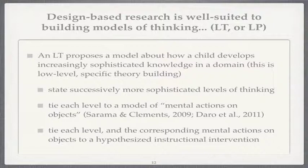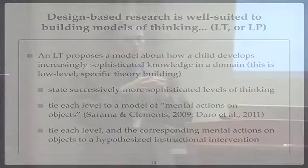A learning trajectory proposes a model. We want to state successively more sophisticated levels, tie each level to a model of mental actions on objects, and tie those levels and corresponding mental actions to hypothesized instructional interventions. So there are three columns: the first is successively more sophisticated levels in observational language — what could you see the kid doing? The central column is what they're probably thinking. And the far column is what kinds of things could you do to help them grow.